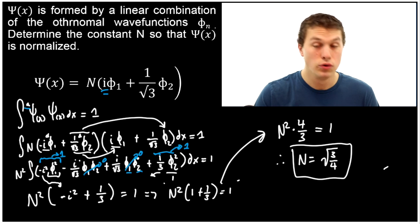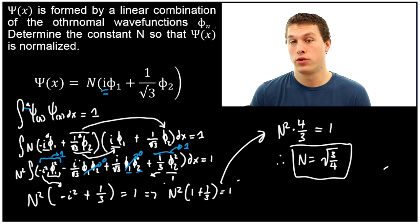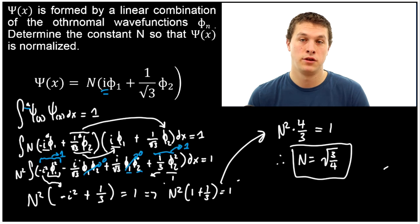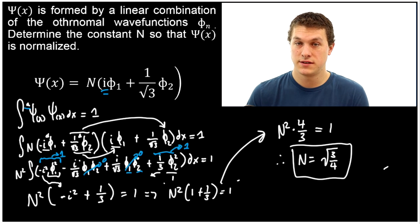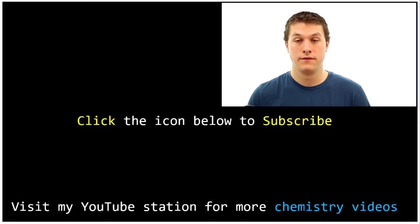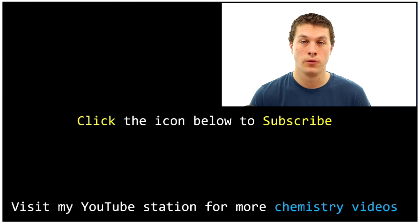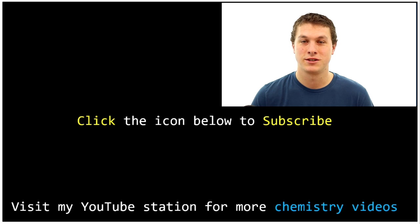So that's how we use orthonormal properties to normalize a linear combination of wave functions. Remember, if you ever have an orthonormal set of wave functions — which you very often will in quantum mechanics — when you multiply the same wave function by itself you get 1, and if you multiply two different wave functions from that set you get 0. That helps you resolve these integrals in a very easy way. Thanks for watching Real Chemistry. Ask any questions you have about this episode below, and you can subscribe by clicking the Real Chemistry link. Thanks for watching.